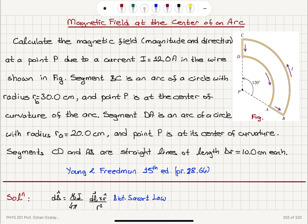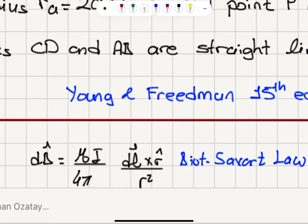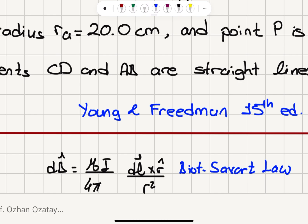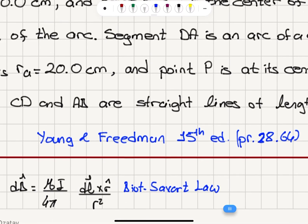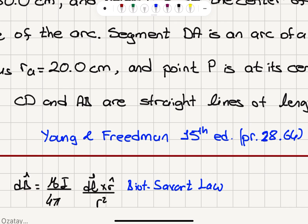We have to recall the Biot-Savart law. The Biot-Savart law says the magnetic field due to a current-carrying line element is μ₀I over 4π, dL cross R̂ over R², where R is the position vector from the line element to the point of interest.